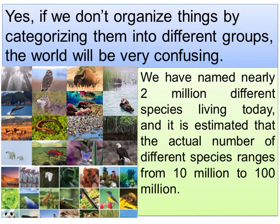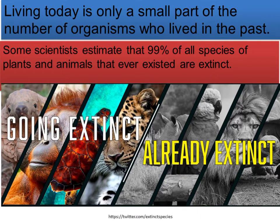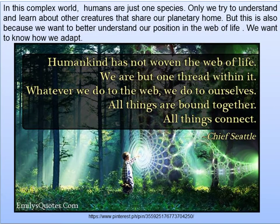If we don't organize things by categorizing them into different groups, the world will be very confusing. We have named nearly 2 million different species living today, and the actual number is estimated to range from 10 million to 100 million — from tiny bacteria seen only under a microscope to whales weighing several tons. Some scientists estimate that 99% of all species that ever existed are now extinct. In this complex world, humans are just one species, yet we try to understand other creatures that share our planet and to better understand our position in the web of life.